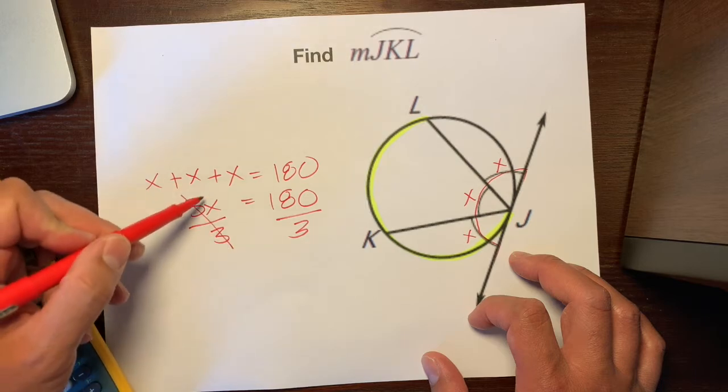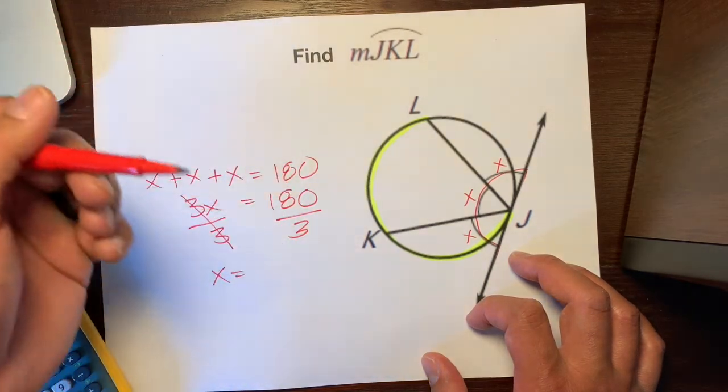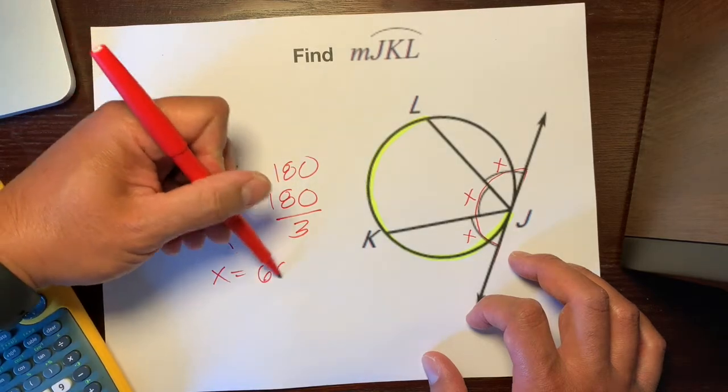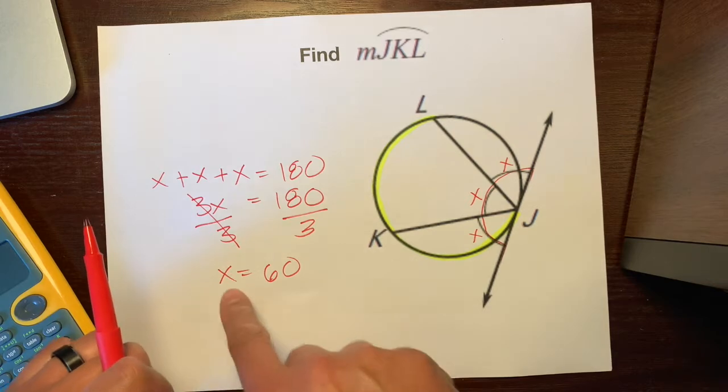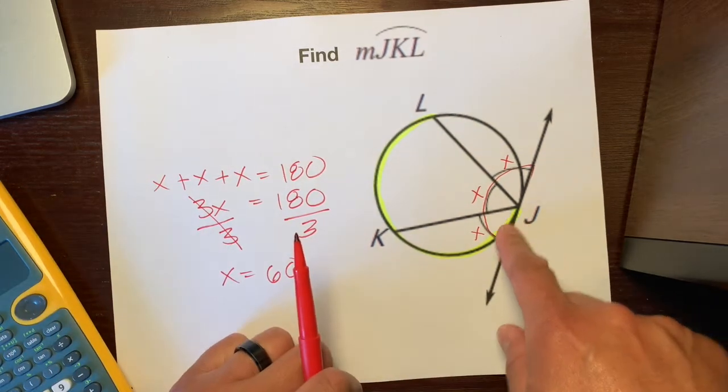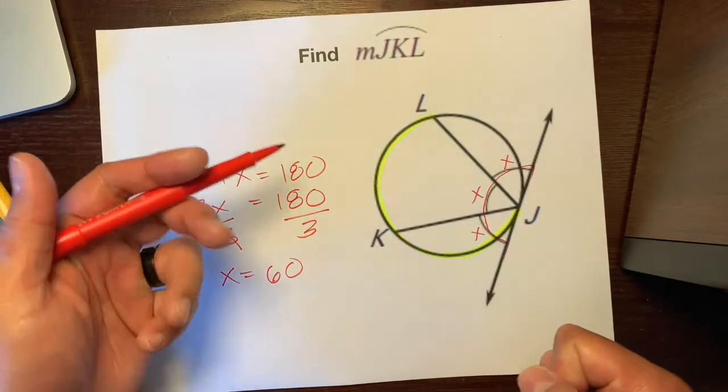3 divided by 3, cancel that out so that we just have X and 180 divided by 3 is 60. But we're not done yet because the question says find this, not this. So here we have JKL right here. And so let's try to think back for a few.